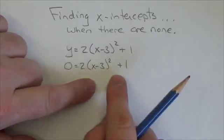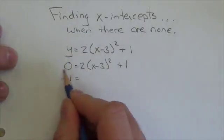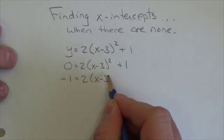One of these terms has an x in it. I want that one by itself, so I'm going to bring that other term over by subtracting it, so negative 1. Okay, subtract the 1 from both sides. Negative 1 is equal to 2 times (x minus 3) squared.